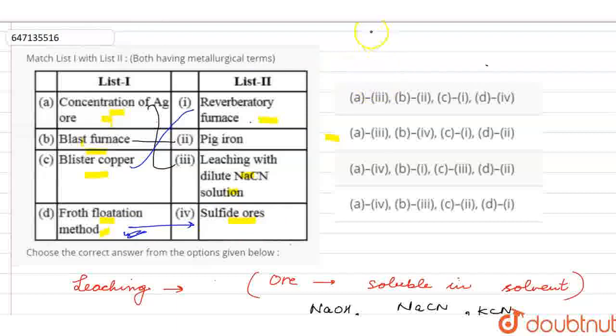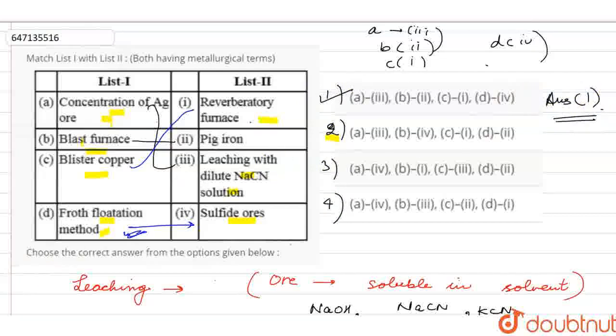So, this is the correct part. I will see the correct match. A is our correct third. B is our correct second. C is our correct first. D is our correct fourth. So, this is our correct match. Which option? Part one. Okay? So, the answer will be one. Thank you.